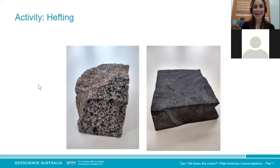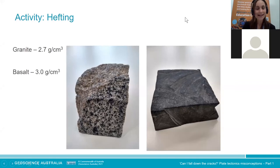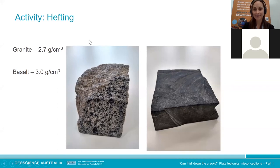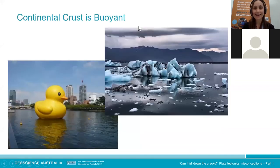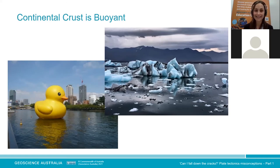We tell students they won't be able to tell the exact densities from that activity, but hopefully they can tell which is most dense and which is least dense. If we could measure it in a lab, we'd find the granite is likely 2.7 grams per cc and the basalt about 3. Generally students can tell us the granite feels less dense than the basalt. This essentially means our continental crust is buoyant — which is a very strange thing to think about. We're not comparing it to water, but to the other rocks around it — in this case oceanic crust.